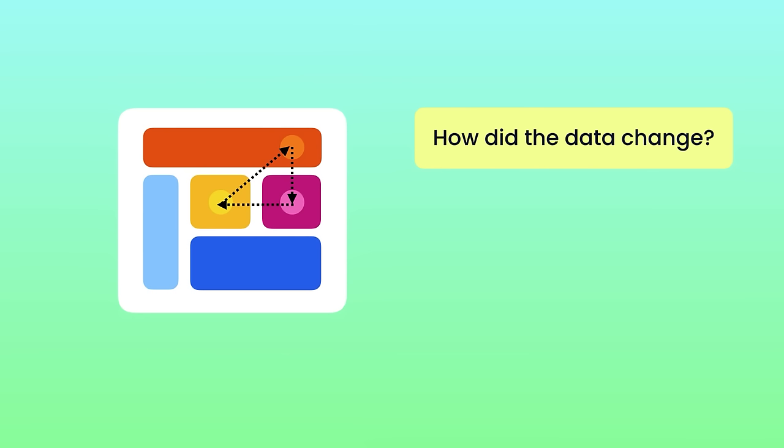Why do we need a state management library to start with? If you have ever built an application with a complex UI, you've probably come across situations where you need to keep different parts of the UI in sync. If the user changes some data in one part of the UI, other parts should immediately update to reflect the changes. Data can also get updated as a result of network requests or background tasks, flowing in unpredictable ways. We have to write a lot of code to keep everything in sync, and figuring out how data changed becomes really complex. You might even end up with an infinite loop. That is a sign you need a state management library.